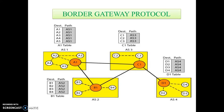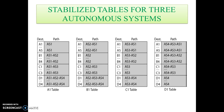If router A1 receives a packet from node A3, it knows that the path is within AS1. But if it receives a packet from D1, it knows that the packet should go from AS1 to AS2 and then to AS3, and the routing table shows that path completely. On the other hand, if node D1 in AS4 receives a packet for node A2, it knows it should go through AS4, AS3, and AS1. This is the stabilized table for three autonomous systems which are interconnected: A1 to A2, A1 to B1, B1 to C1, C1 to D1.